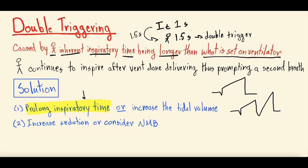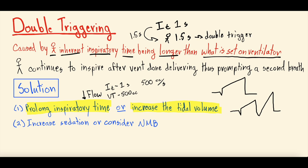Another way to think about this is decreasing the flow. In volume control, flow is essentially a result of inspiratory time and tidal volume — if you're delivering 500 cc over one second, flow is 500 cc per second. Decreasing flow essentially means prolonging the inspiratory time. You can also increase the tidal volume being delivered to match what the patient's inspiratory effort wants, thus stopping them from prompting that second breath.